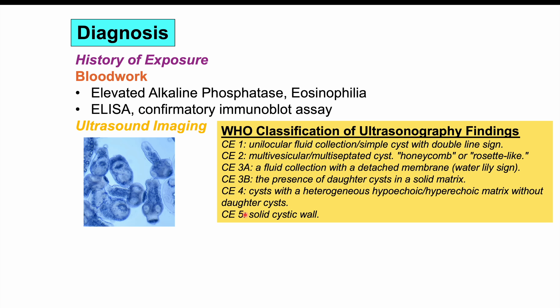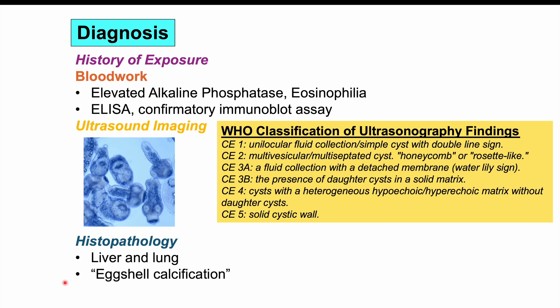Histopathology can also be performed. The key finding to remember is what we call eggshell calcification. If you see this term on a test or on pathology with a liver abscess or liver cyst, you want to think about echinococcus granulosus.